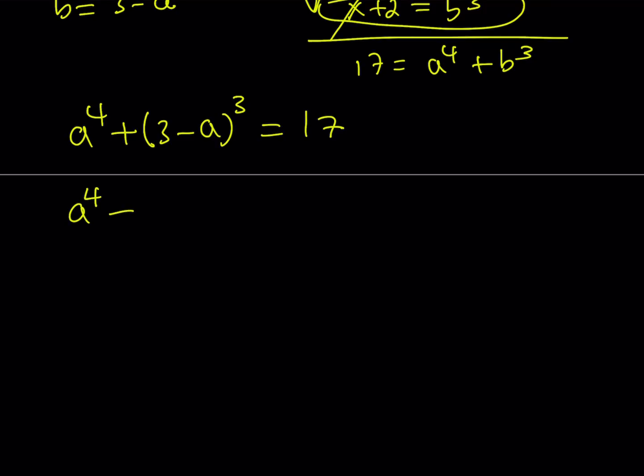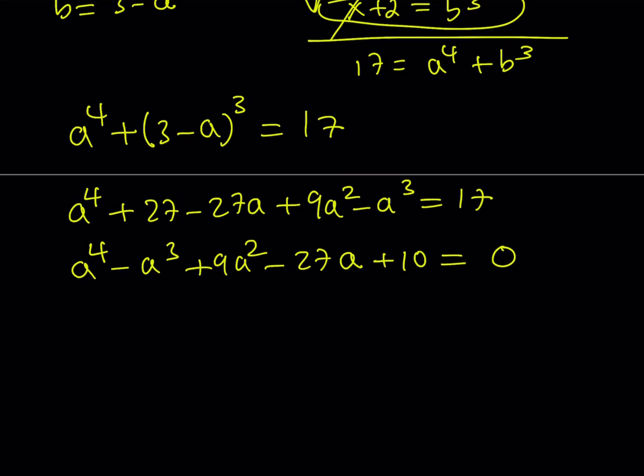Let's go ahead and expand it. We get a to the 4th power plus, now if you cube 3 minus a as you know from the binomial theorem, you can just write this as 27 minus 27a plus 9a squared minus a cubed equals 17. Let's go ahead and rearrange the terms. a to the 4th power minus a cubed plus 9a squared minus 27a, 27 minus 17 is equal to positive 10, and the whole thing is equal to 0.